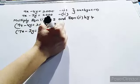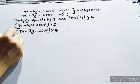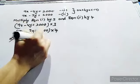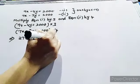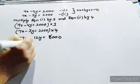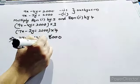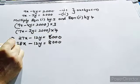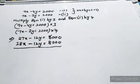So what value are you getting? 27x minus 12y equals 6000. 28x minus 12y equals 8000.